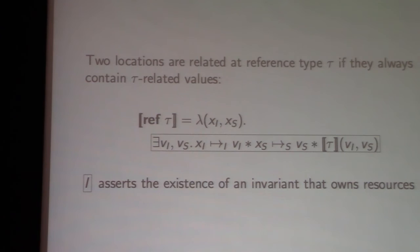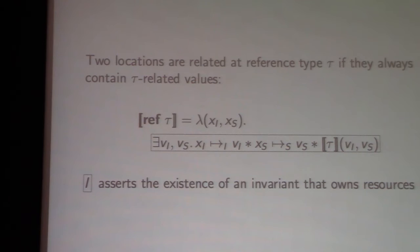The other thing I glossed over is how to express the relation between heaps. In these models, this is captured by the interpretation of the reference type. The idea is that two locations are related at reference type ref tau if the current value at the implementation location and the current value at the specification location always contain tau-related values. We can express this in Iris as a simple invariant.